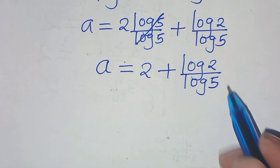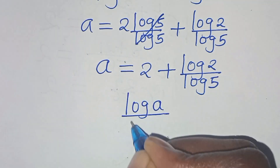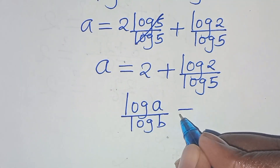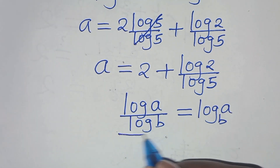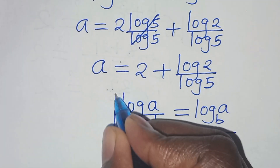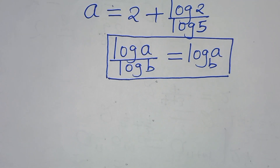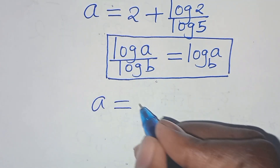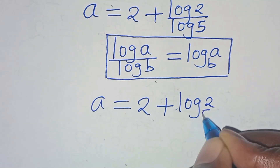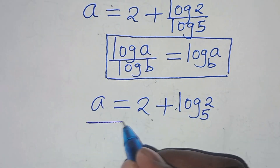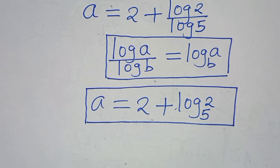Now, log 2 divided by log 5 is in the form of log a over log b, which we can express as log a to base b. Applying this logarithm property, then a is equal to 2 plus log 2 to base 5. This is the value of a.